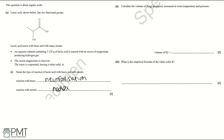Part two: calculate the volume of hydrogen gas produced measured at room temperature and pressure. We're going to start by working out the number of moles of lactic acid using the equation: moles = mass divided by relative formula mass. We've been given the mass of lactic acid as 1.125 grams, and we divide by the relative formula mass.